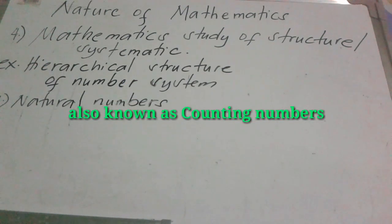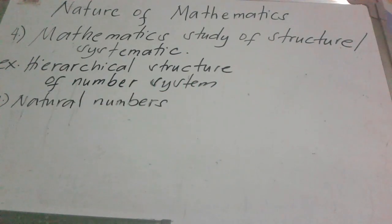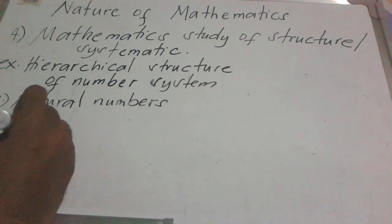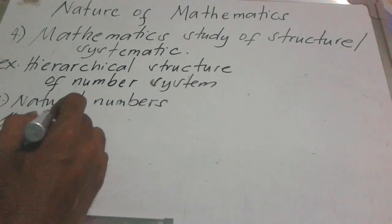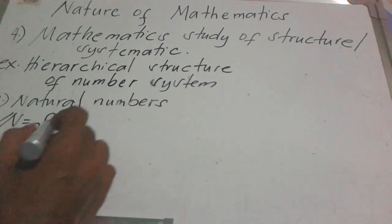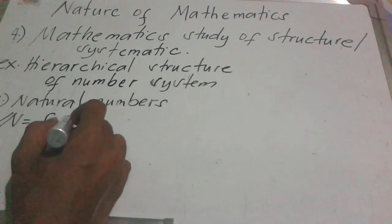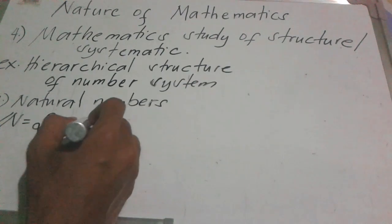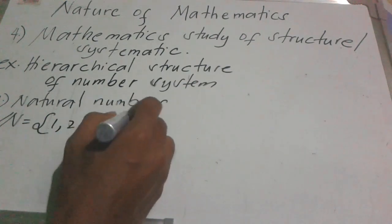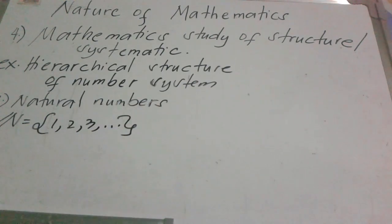So when we say counting numbers, you start at 1, 2, 3, and so on. The symbol for natural numbers — remember this — is N, and it goes 1, 2, 3, and so on.